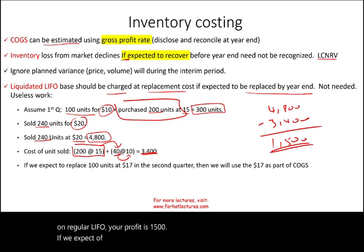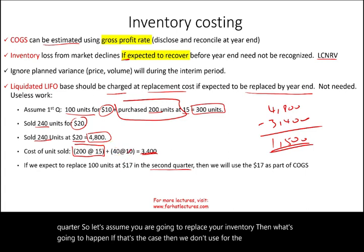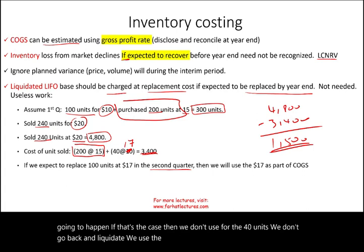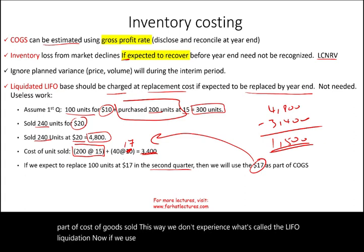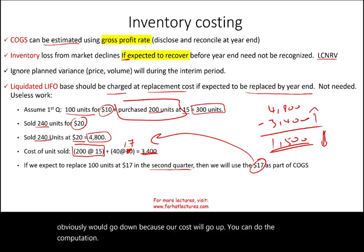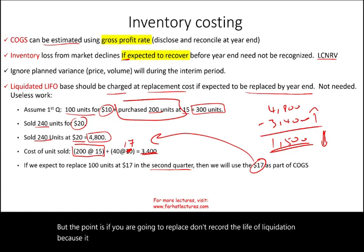If the company expects to replace 100 units at $17 in the second quarter, then for those 40 units we don't liquidate the old LIFO layers — we use the $17 replacement cost in cost of goods sold instead. This way we don't experience LIFO liquidation. Our profit will go down because costs go up, but the point is: if you are going to replace the inventory, don't record the LIFO liquidation during the quarter because the second quarter will reverse it.